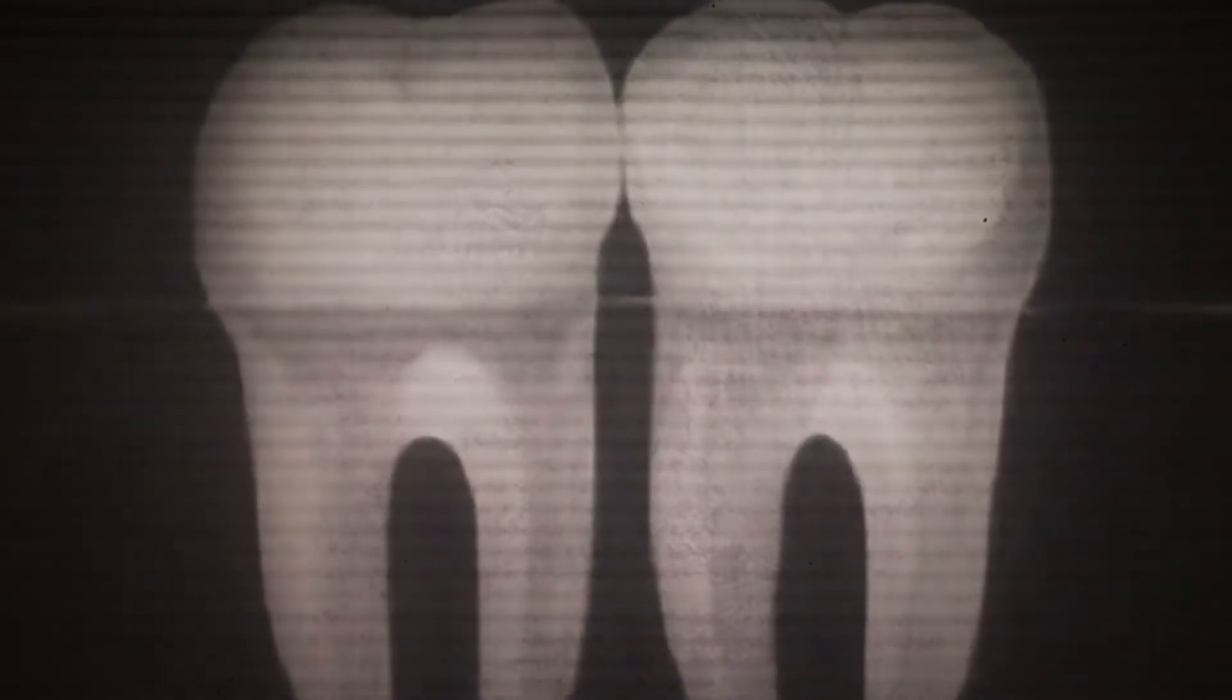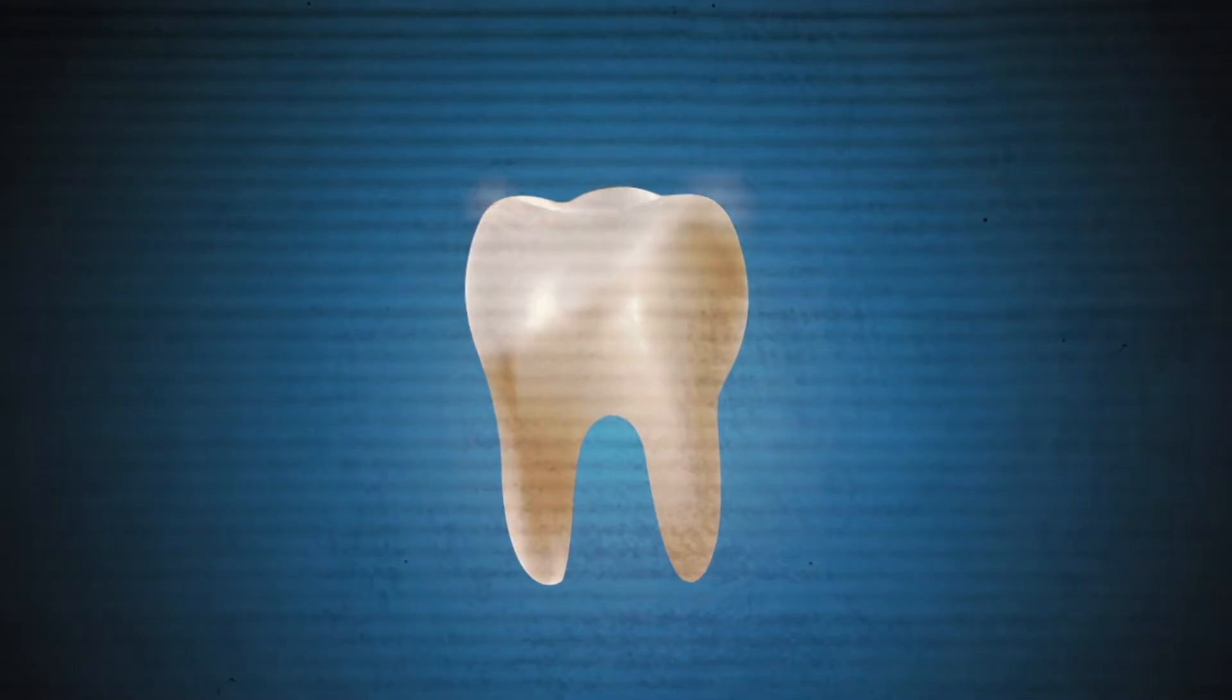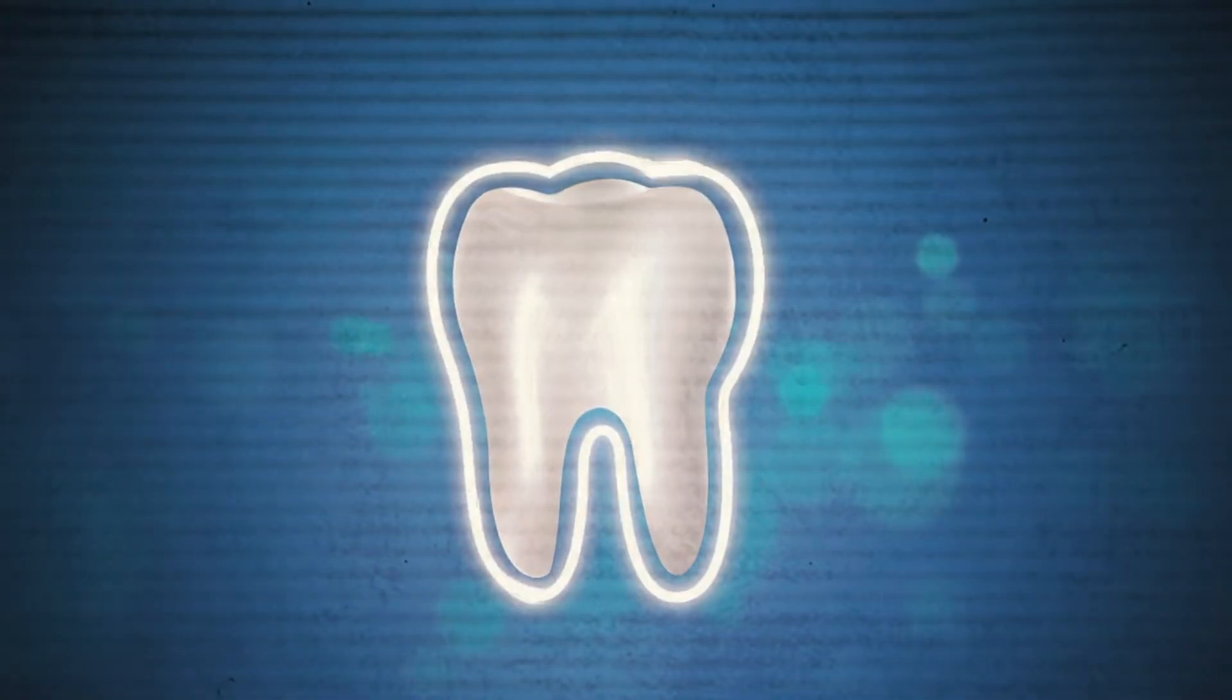Teeth are the hardest part of the human body, thanks to a calcified tissue called dentine. Dentine is covered with another material called enamel, which gives teeth their hard, shiny surface, your pearly whites.